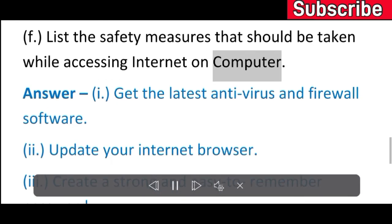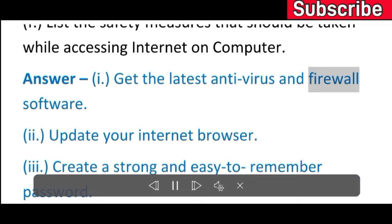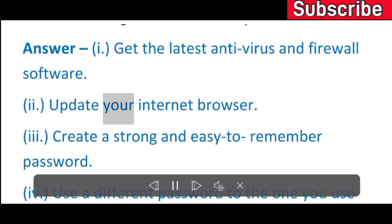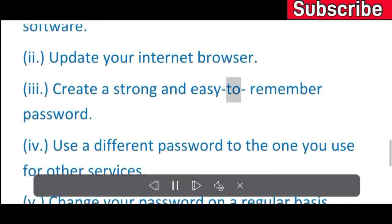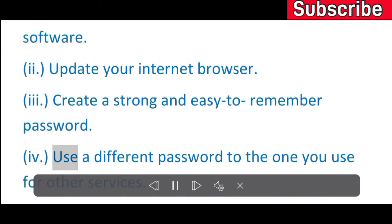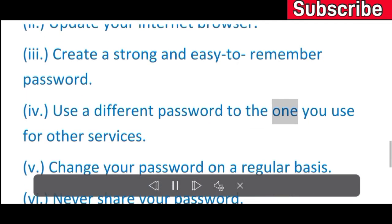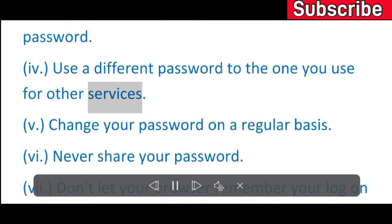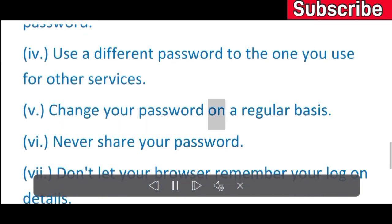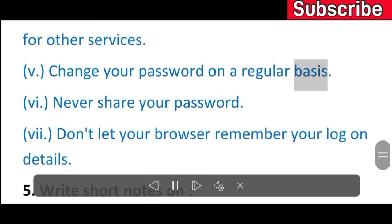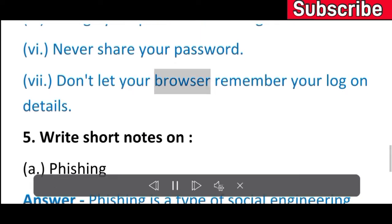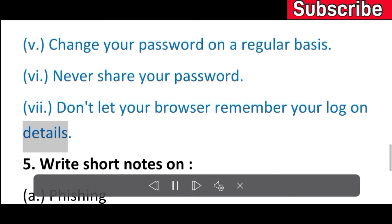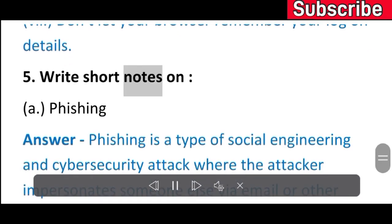F) List the safety measures that should be taken while accessing the internet on a computer. Answer: I) Get the latest antivirus and firewall software. II) Update your internet browser. III) Create a strong and easy to remember password. IV) Use a different password to the one you use for other services. V) Change your password on a regular basis. VI) Never share your password. VII) Don't let your browser remember your log-on details.